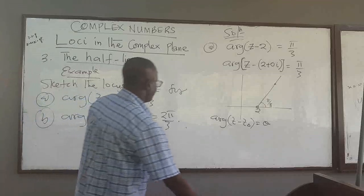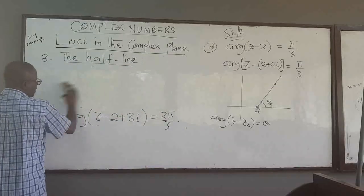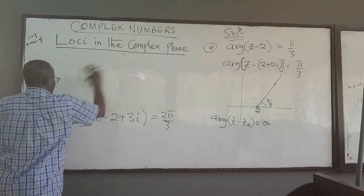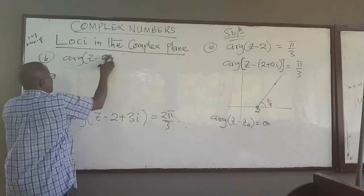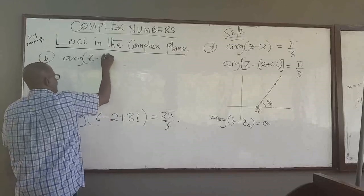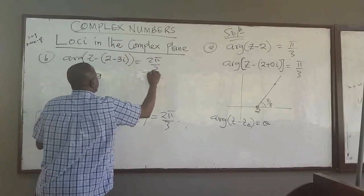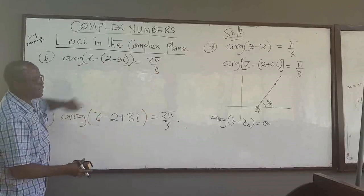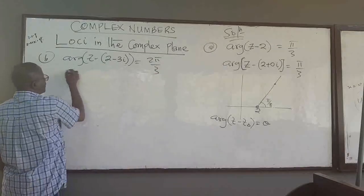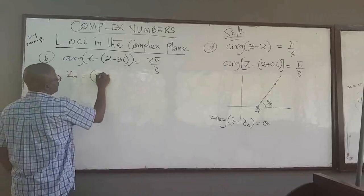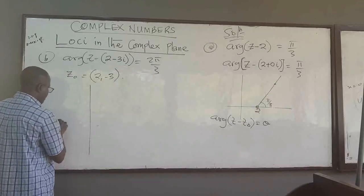For part (b), we have arg(z minus (2 minus 3i)) equals 2pi over 3. Rewriting, z naught is the point where the x-axis value is 2 and the y-level is negative 3. So on the complex plane, we look for the point (2, negative 3).